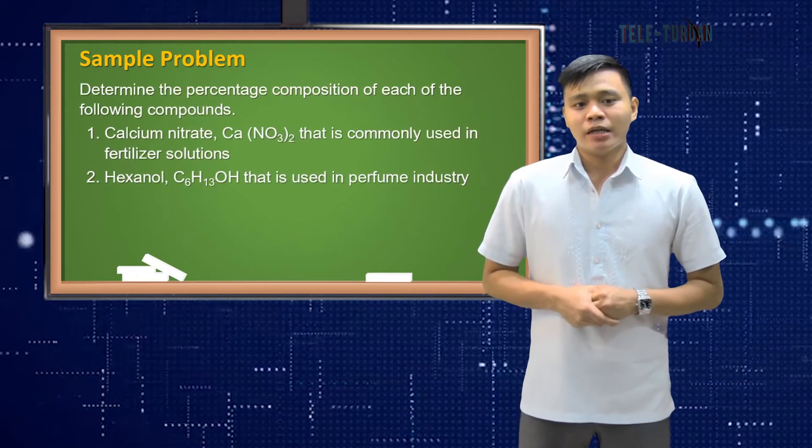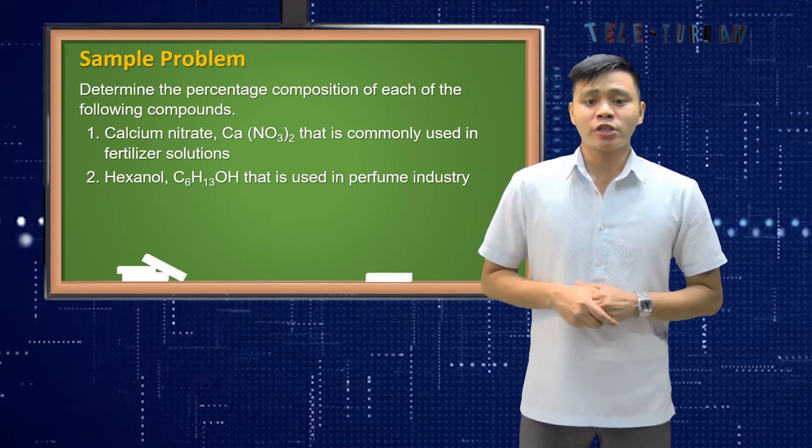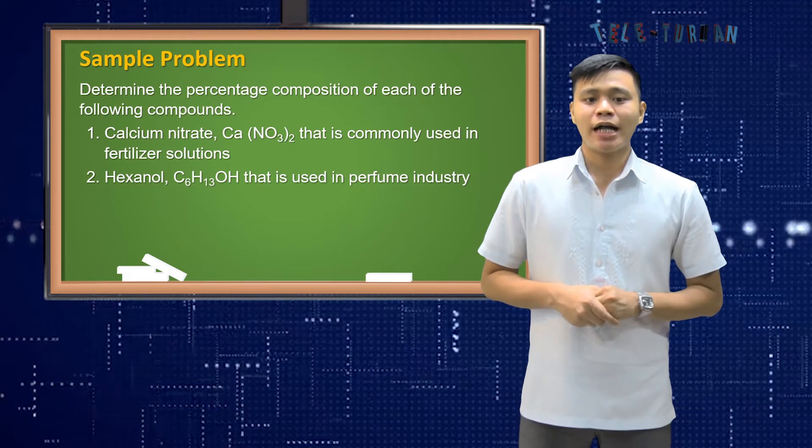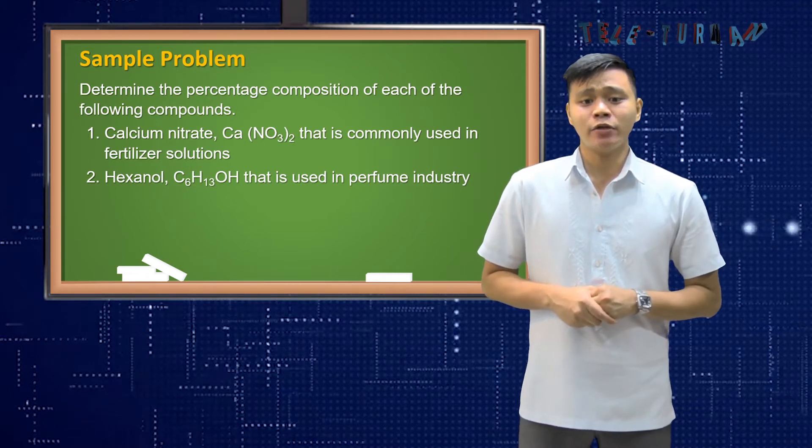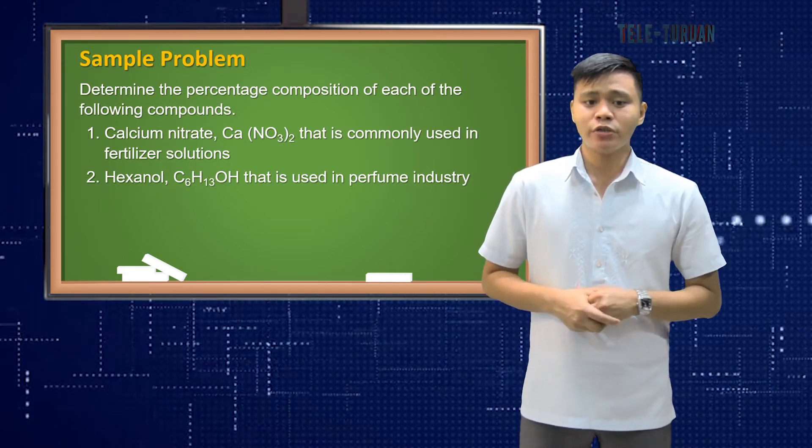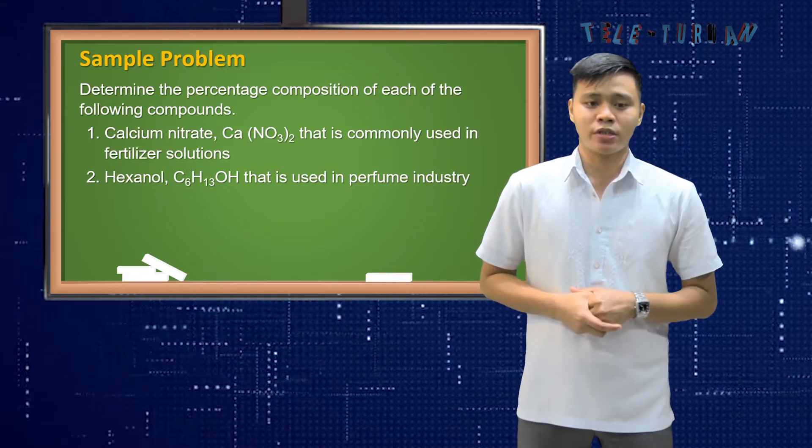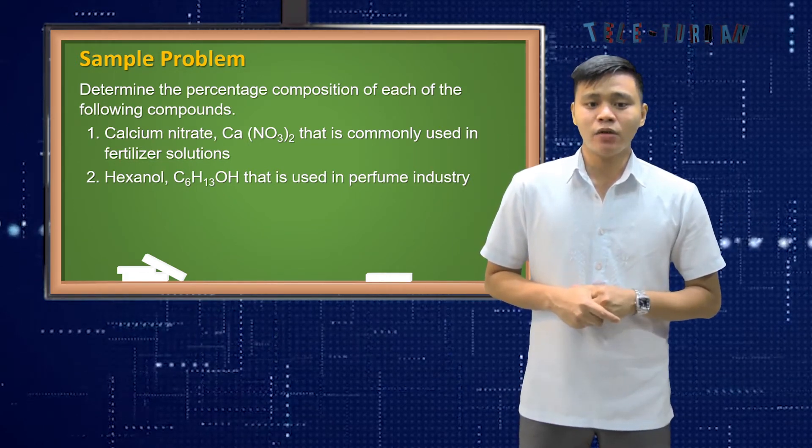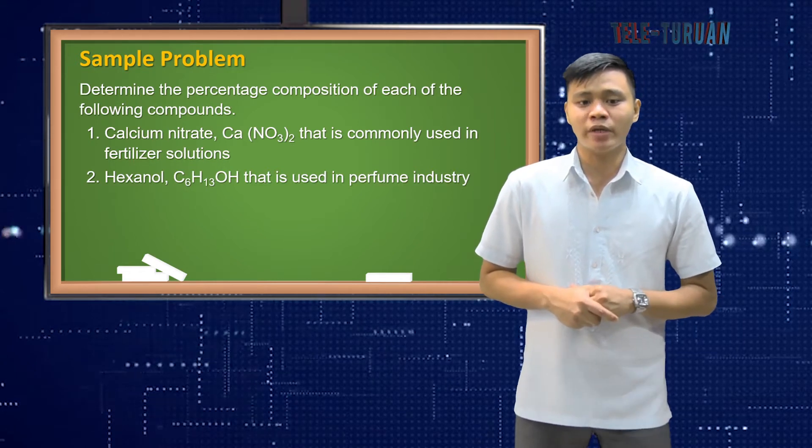Sample problem. Determine the percentage composition of each of the following compounds. First, calcium nitrate or Ca(NO3)2 that is commonly used in fertilizer solutions. And number two, hexanol or C6H13OH that is used in perfume industry.